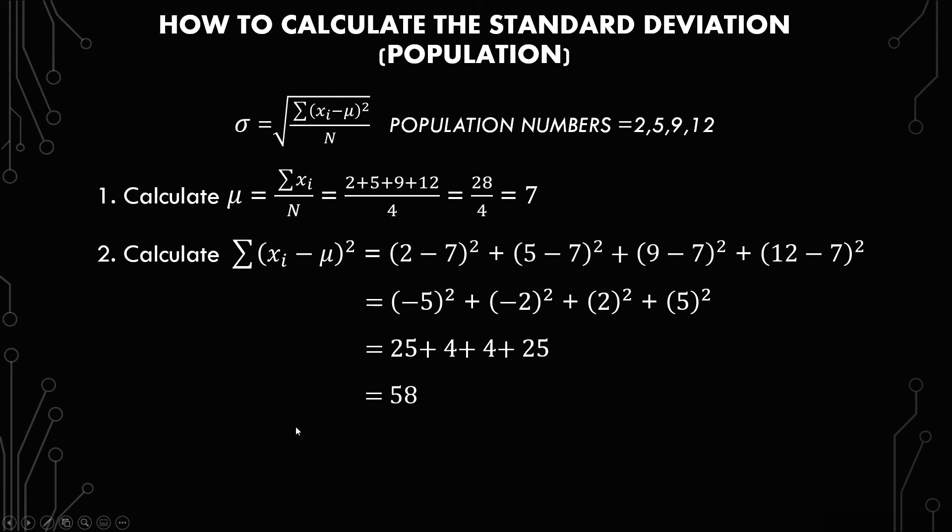So now that we have 58, let's just plug it in and find out what the answer is. So we have sigma equals the square root of 58 over N, which equals the square root of 58 over 4, which gives you 3.808. So obviously this is rounded.